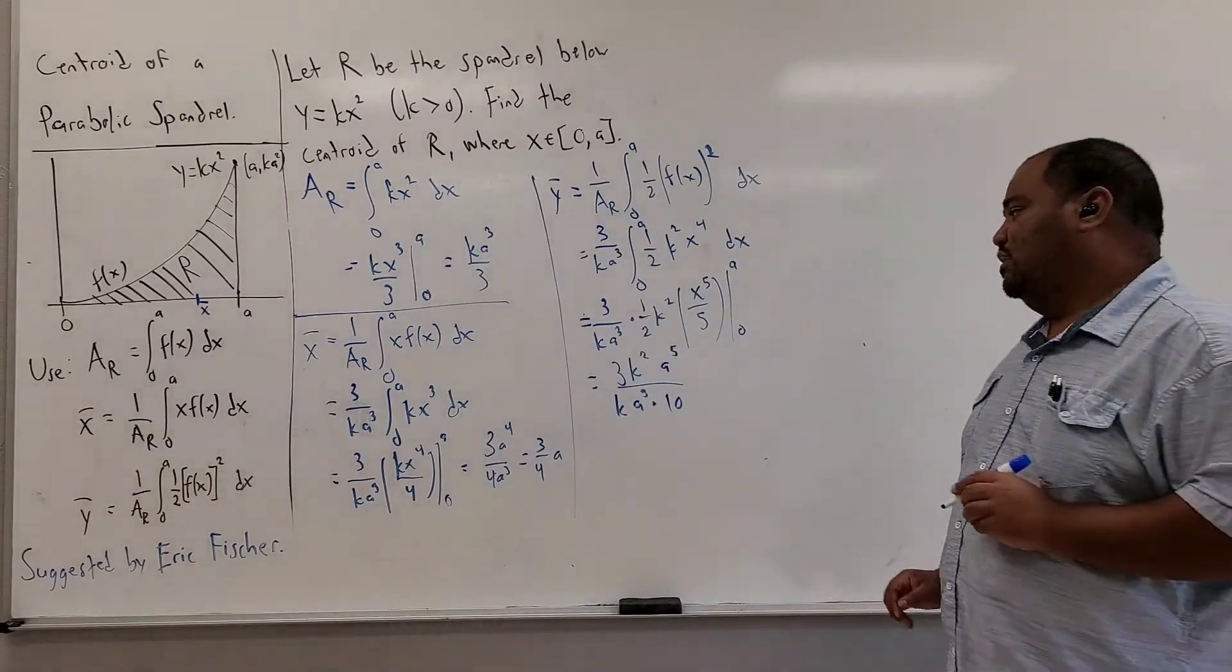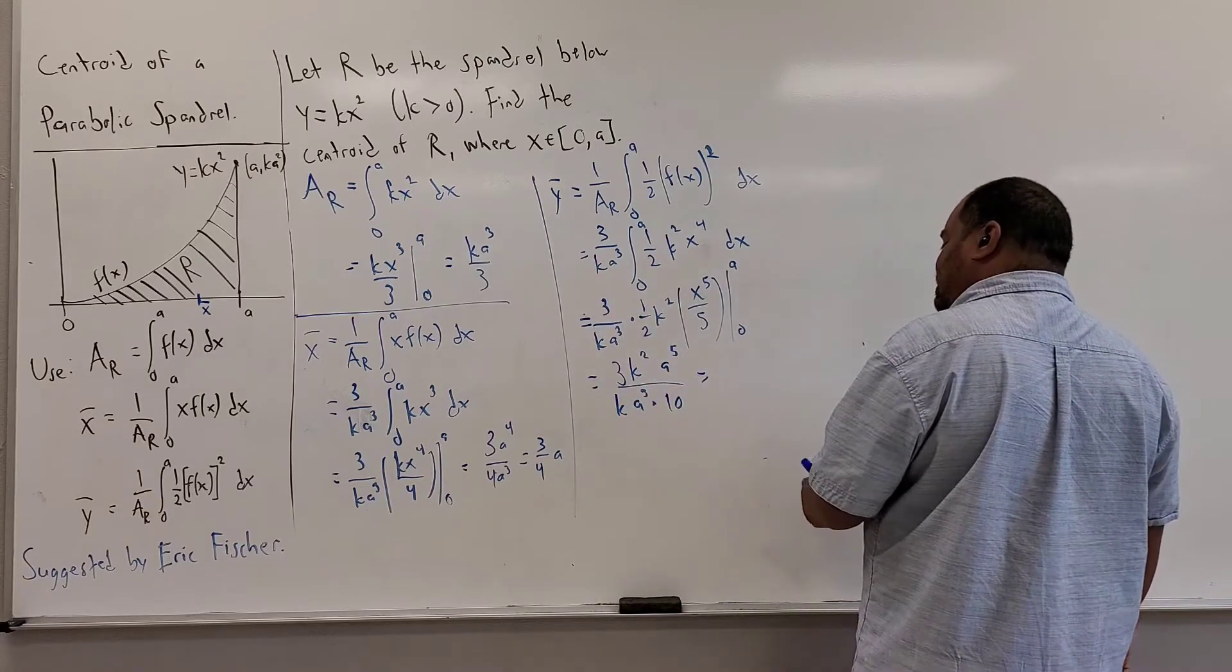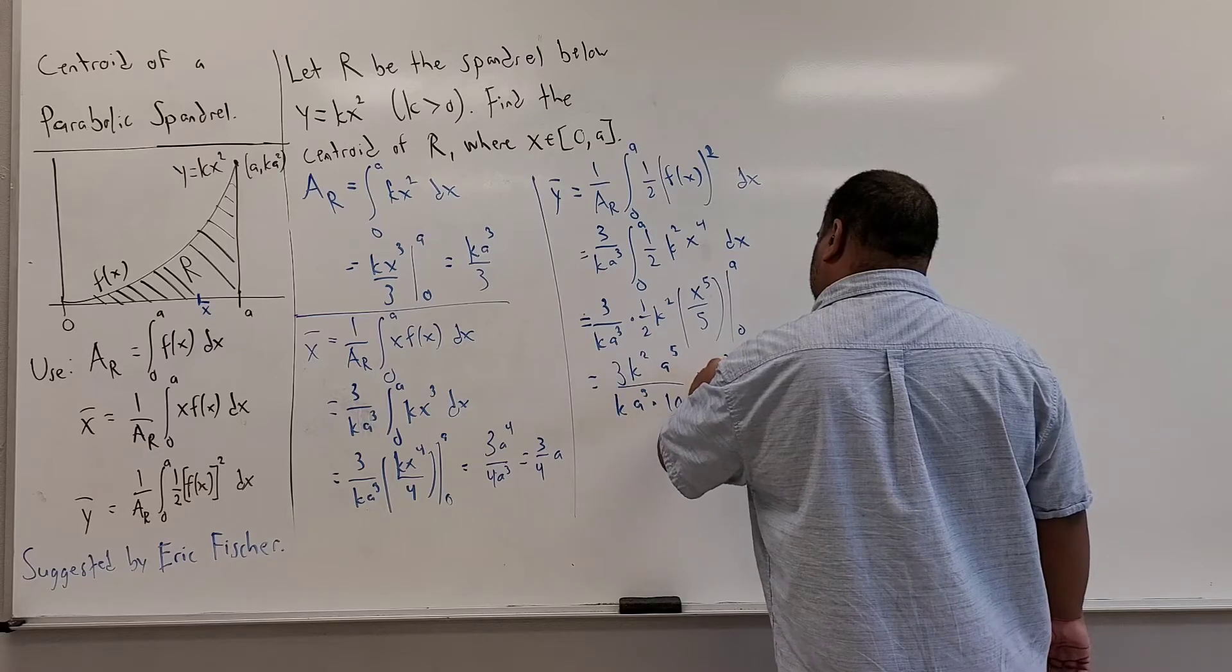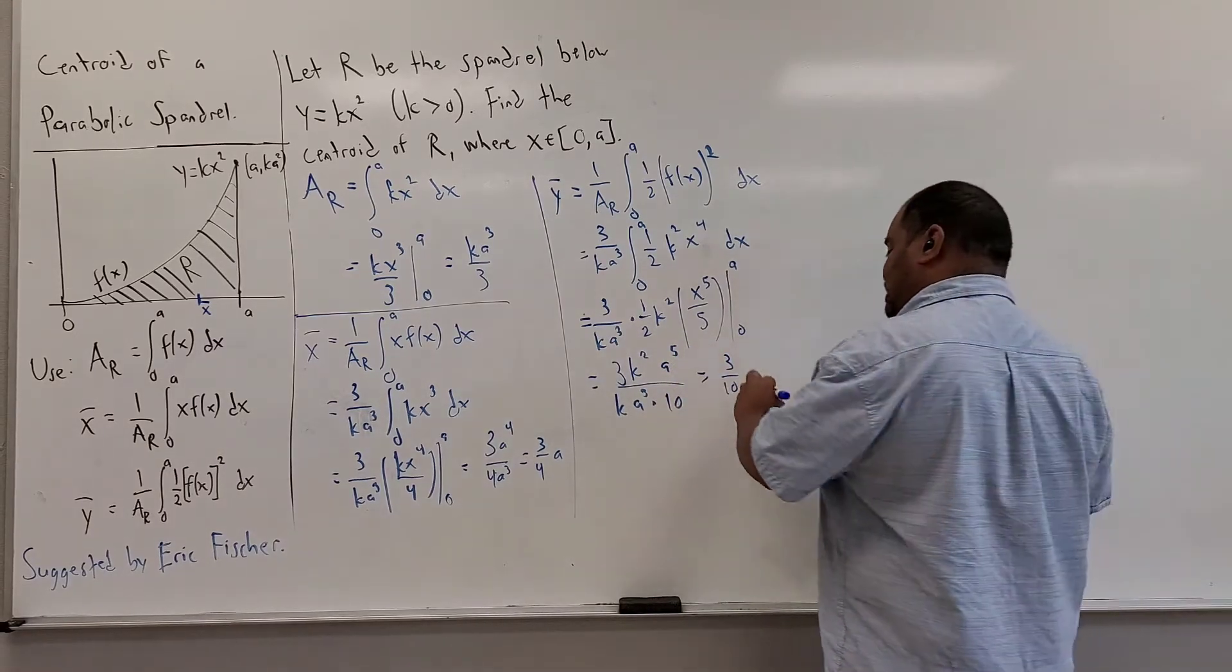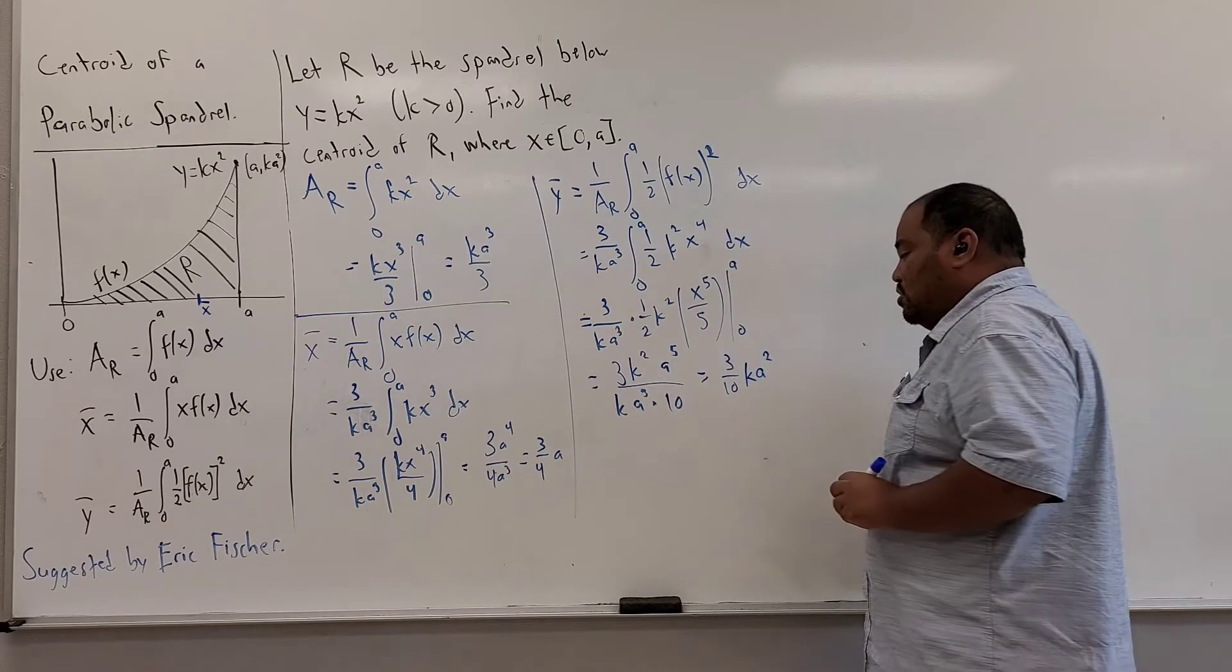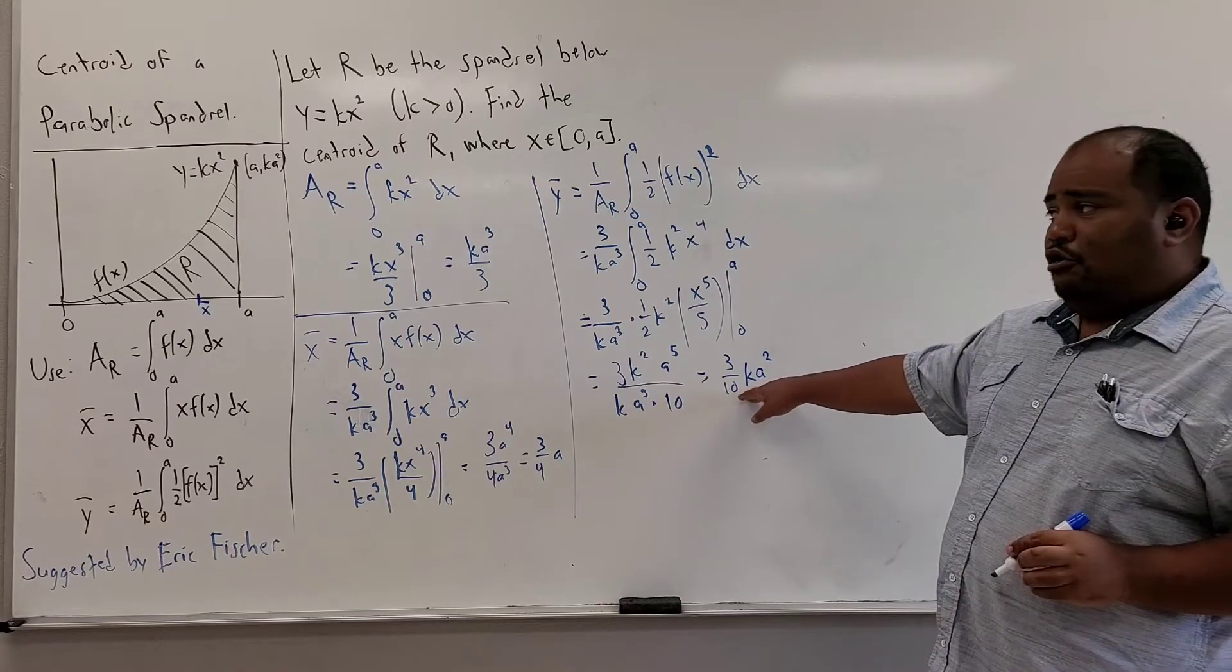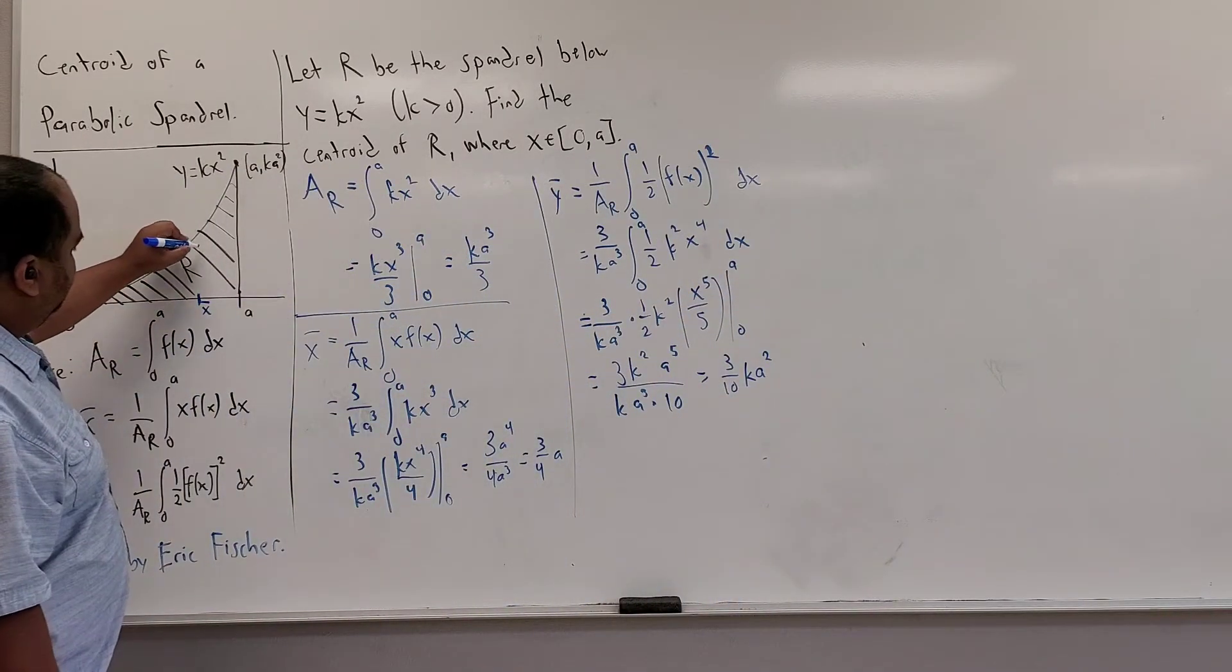And now, once we clean everything up, we see that k squared divided by k is just k, 3 over 10 remains. And a to the fifth divided by a cubed is a squared. And so this is our y value of our centroid, which perhaps could lie here.